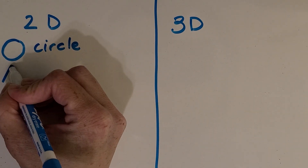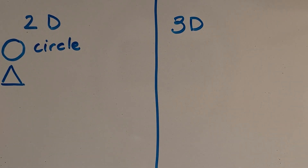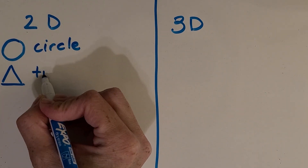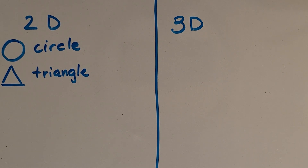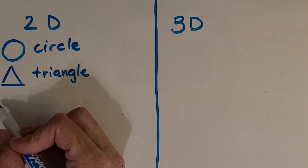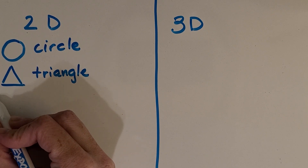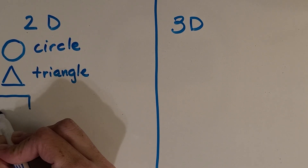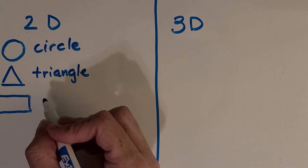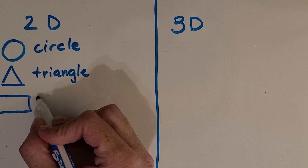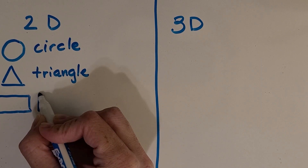Let's look at another type. What shape is that? Awesome — a triangle! You're really familiar with that one. There are different types of triangles, but for this case we're just going to keep looking at different types of shapes with different sides. What about this shape? Awesome — a rectangle!